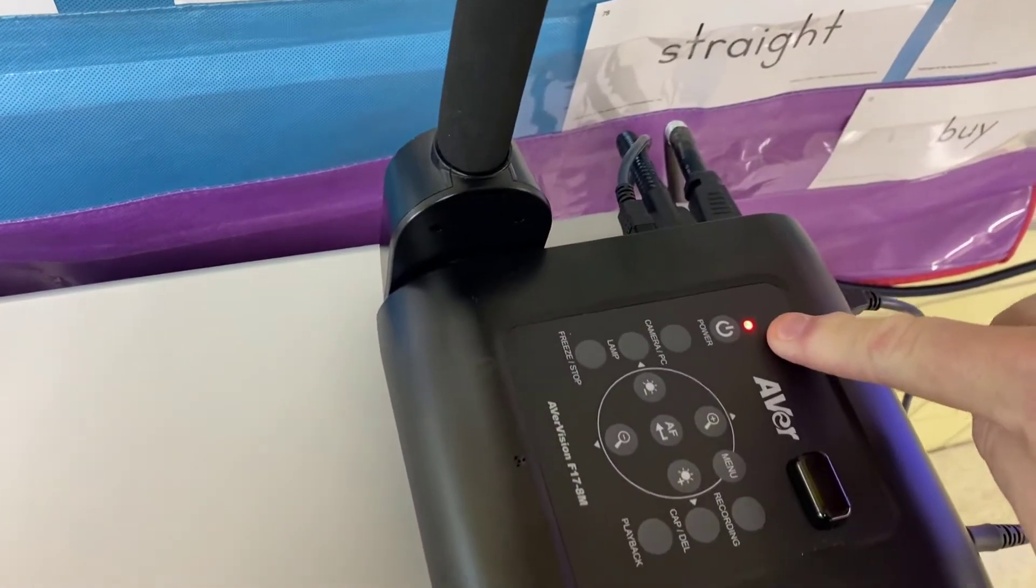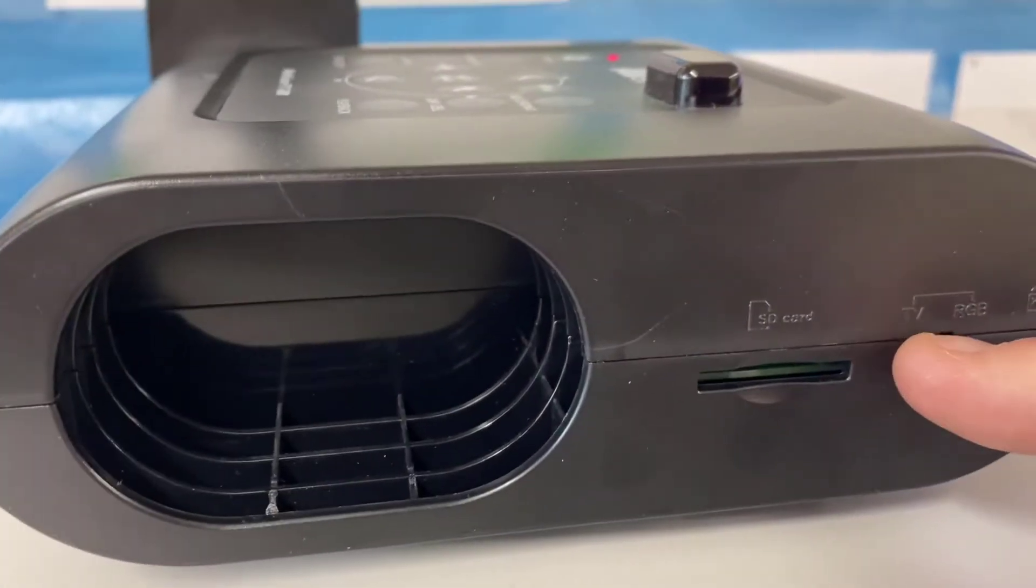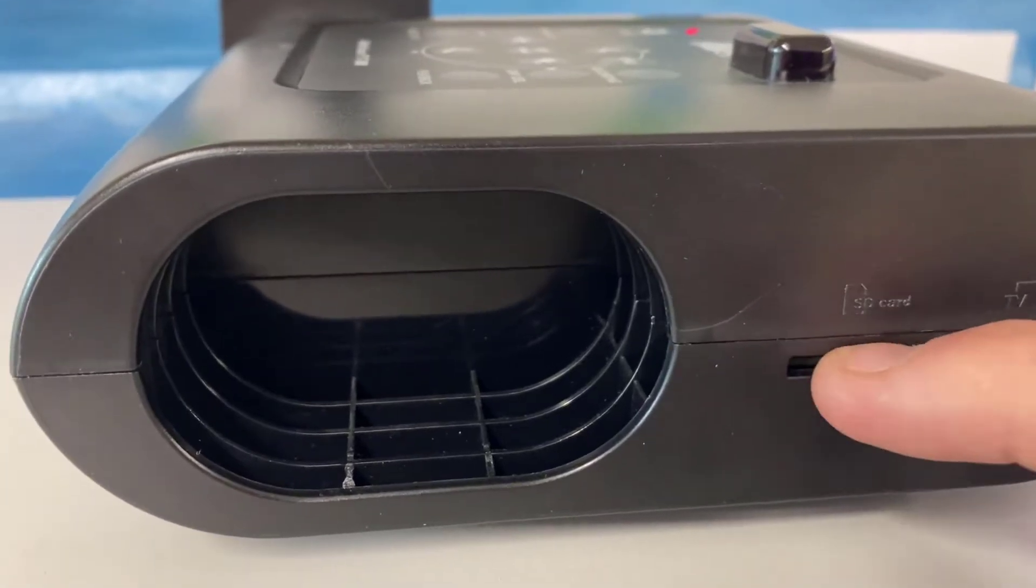Camera is off because the light is red now. On the side of the camera is a switch. It's right next to the SD slot.